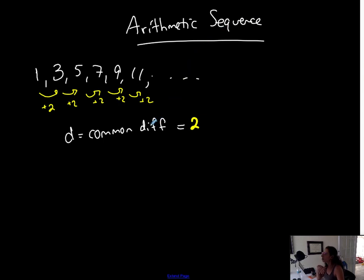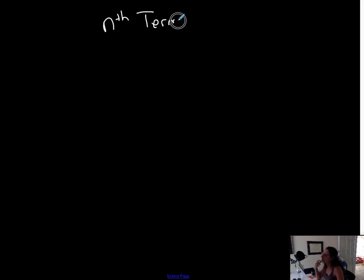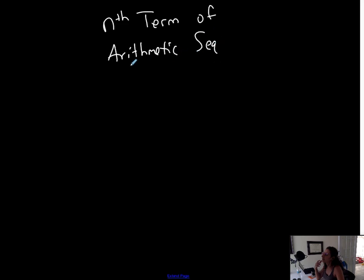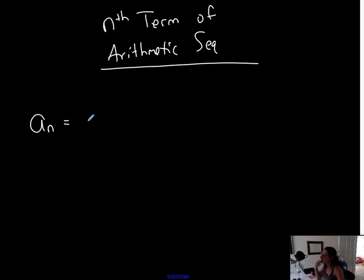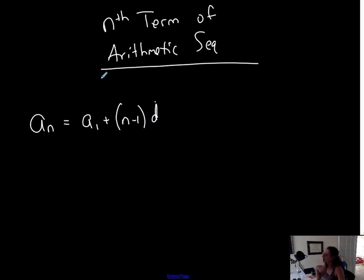And then I can represent the nth term of this particular arithmetic sequence. When I have an arithmetic sequence and I want to represent the nth term, you're going to represent it in explicit form. And it's this formula: the nth term of an arithmetic sequence is always the first term plus n minus 1 times d, which is the common difference. This is the formula.